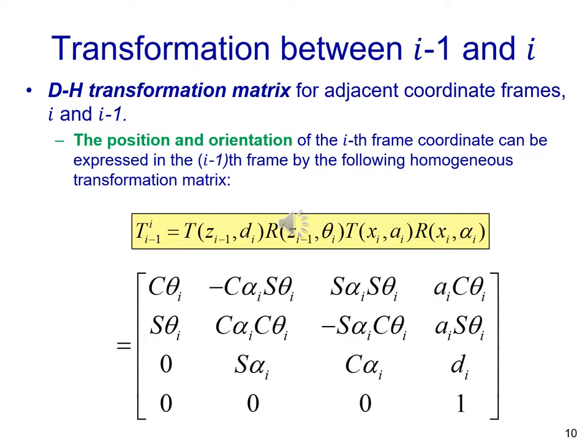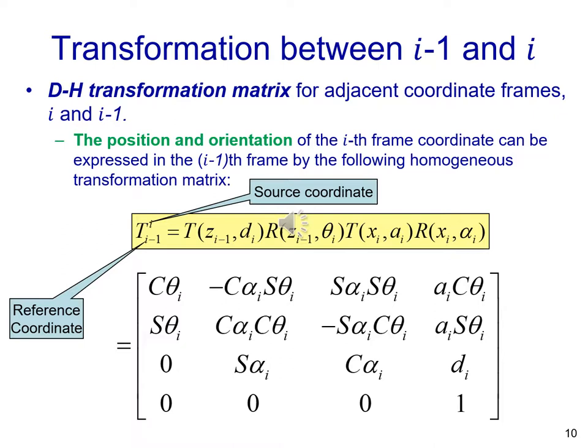In order to find the Denavit-Hartenberg transformation matrix, we use only these four basic transformations. The first one is a translation, the second is a rotation — both with respect to the z(i-1) axis, which is the reference coordinate frame. The last two transformations — a translation and a rotation — are along or with respect to the x(i) axis, meaning that is the coordinate frame which has been transformed.